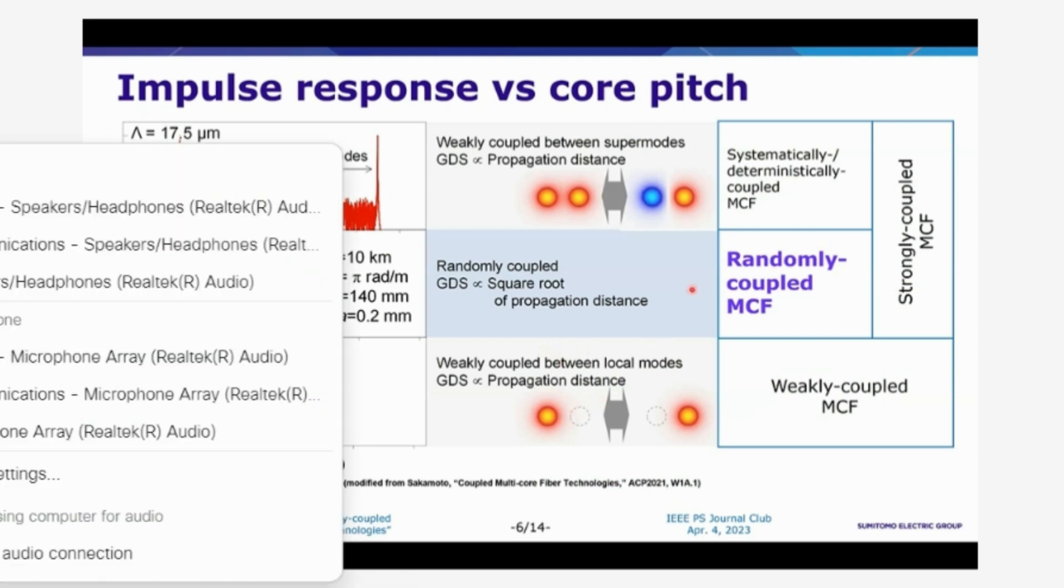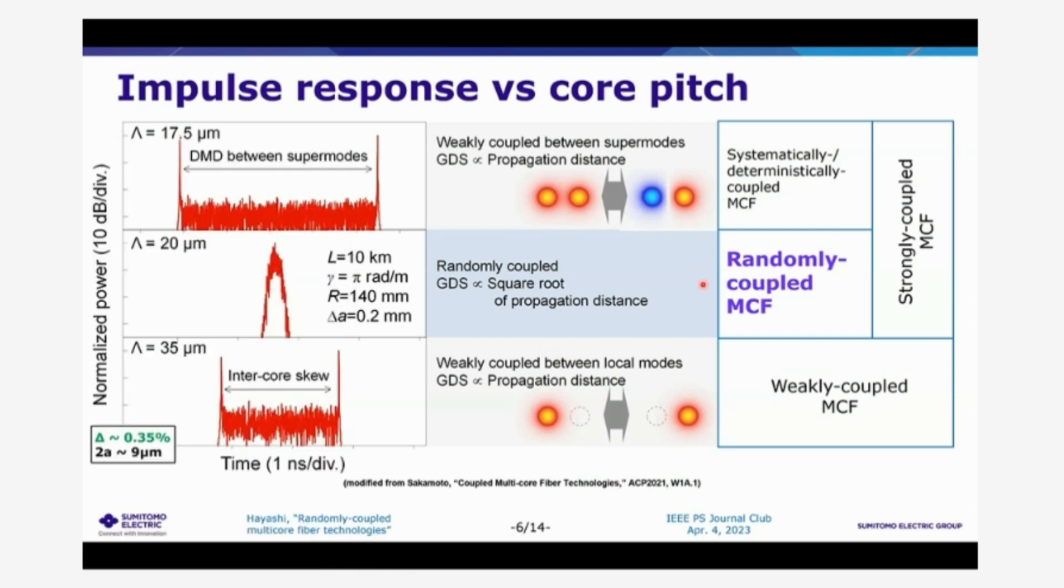So to achieve such a random coupling characteristics, there is optimum core pitch, distance between the cores. If the cores are too tightly placed, too closely placed, the propagation modes in these two cores becomes a very stable supermode propagation. So the coupling between such a supermode can be very weak and the coupling between the core modes becomes systematic or deterministic.